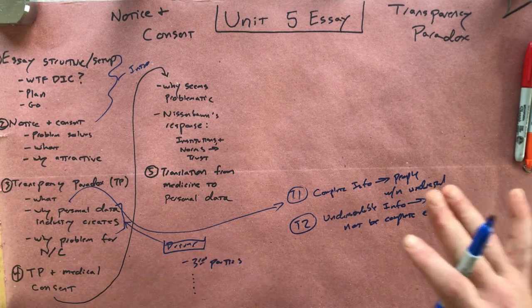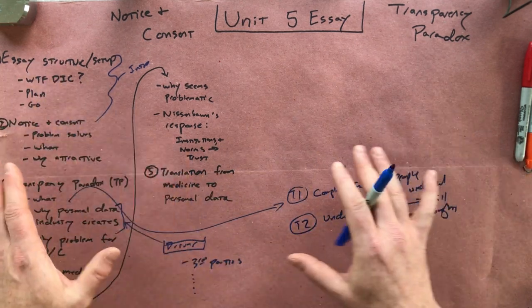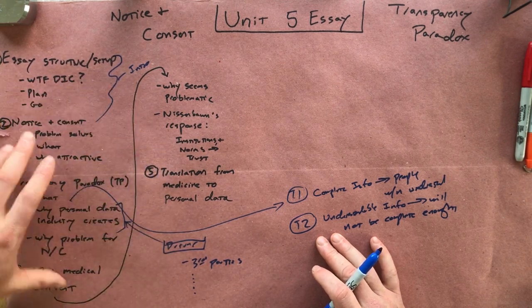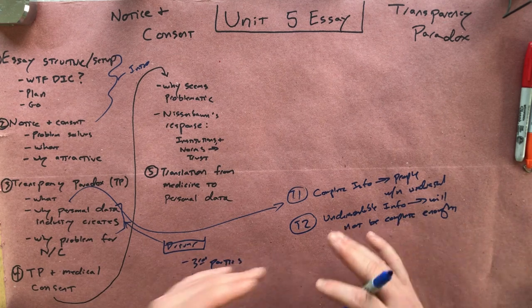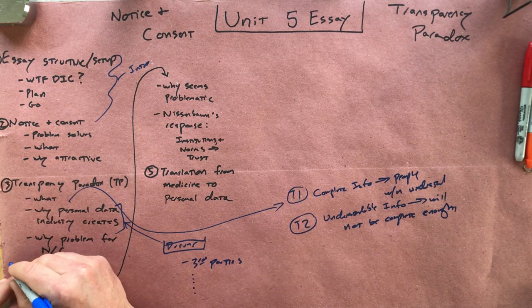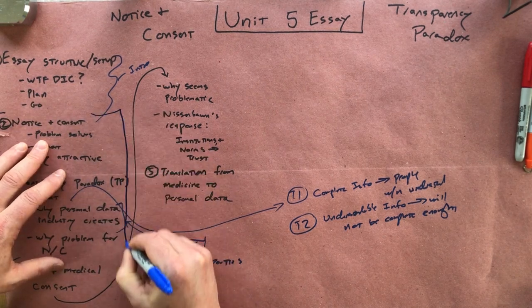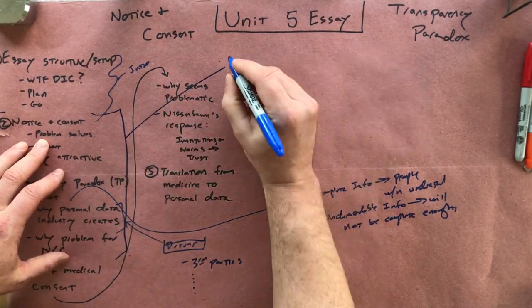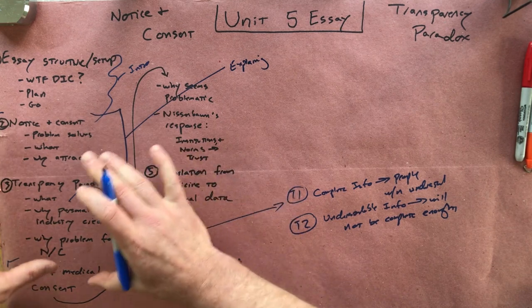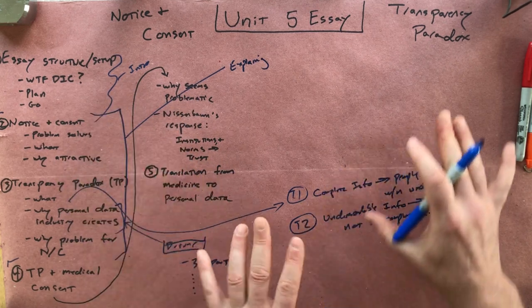So this is all kind of the setup — there's the background or topic, and then there's the part where I ask you to do stuff, where you're supposed to be doing your independent thought increasingly. This explaining part is where you're just setting out the notice and consent model and setting out Nissenbaum's transparency paradox, giving some explanation to make sure it's clear what's actually going on.